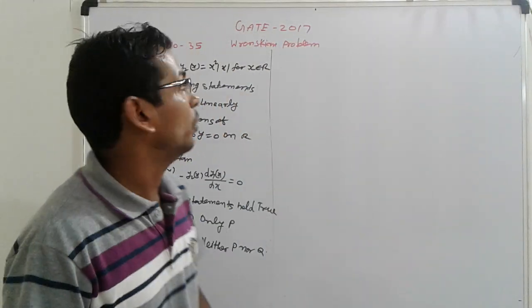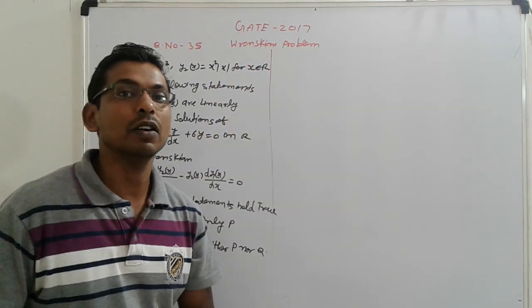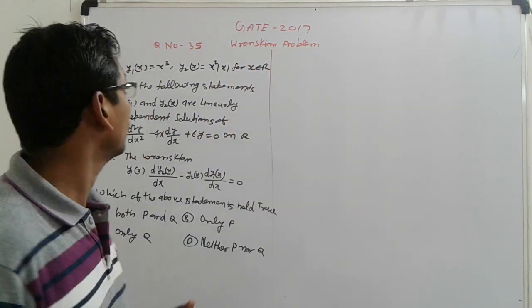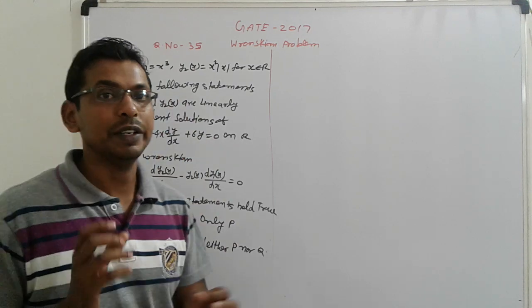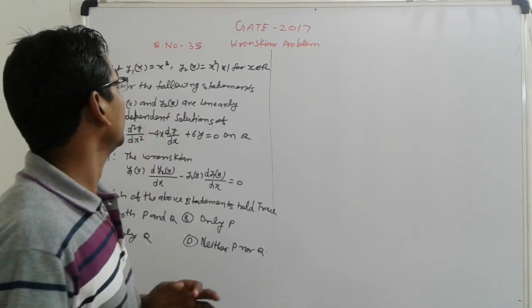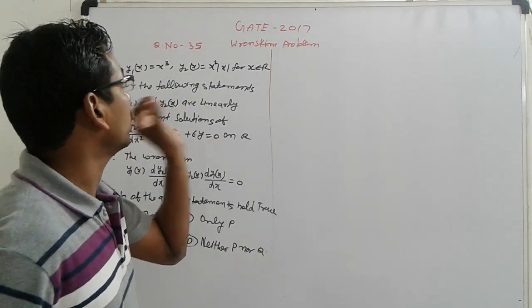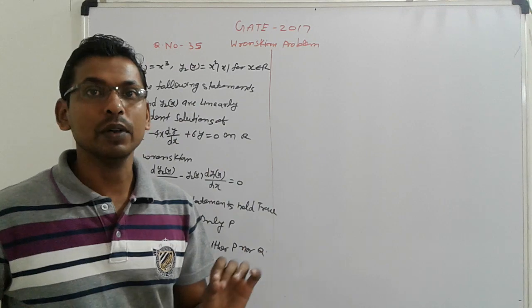Good morning, most welcome to our new lectures of GATE 2017, Wronskian related problem. I have a set that I downloaded from IIT, it is equation number 35. That is a very Wronskian problem, and I have a concept problem.